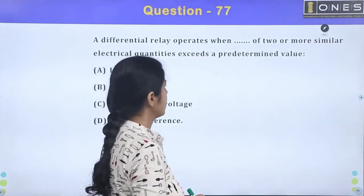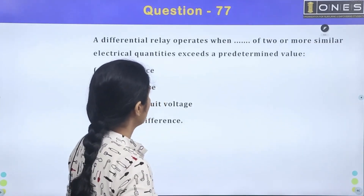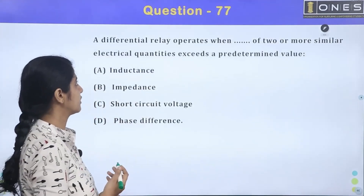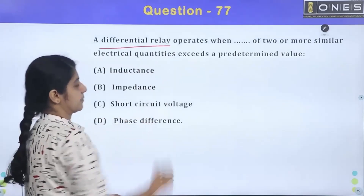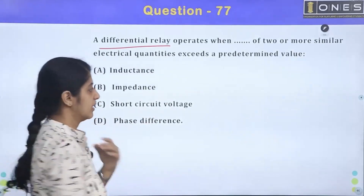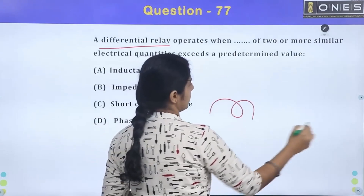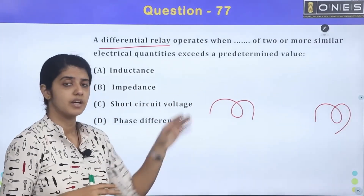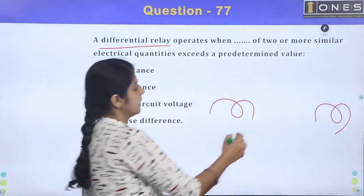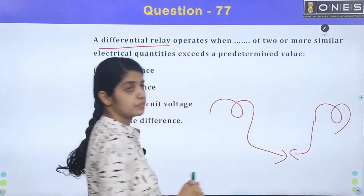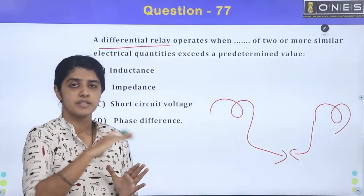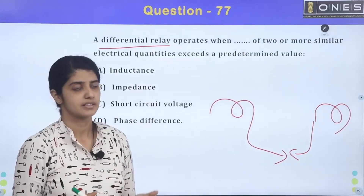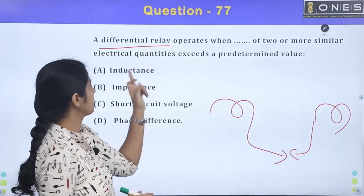A differential relay operates when the difference of two or more similar electrical quantities exceeds a predetermined value. The differential relay has two locations and two measuring instruments. If you measure these two instruments, you can measure the difference value. The differential relay operates based on the set current and voltage.